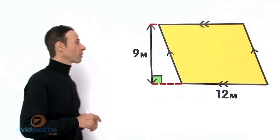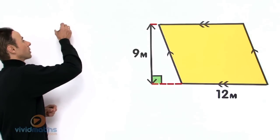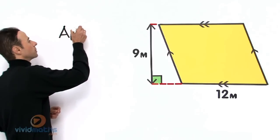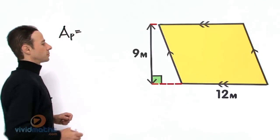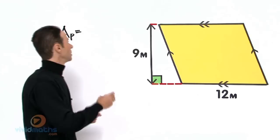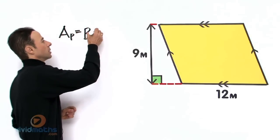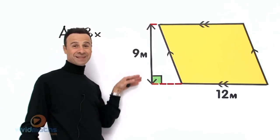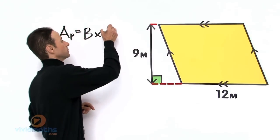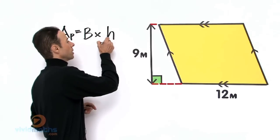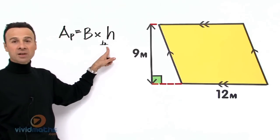So the formula for area of a parallelogram is base times perpendicular height. I'll put a little thing there because it has to be perpendicular—little symbol down there.